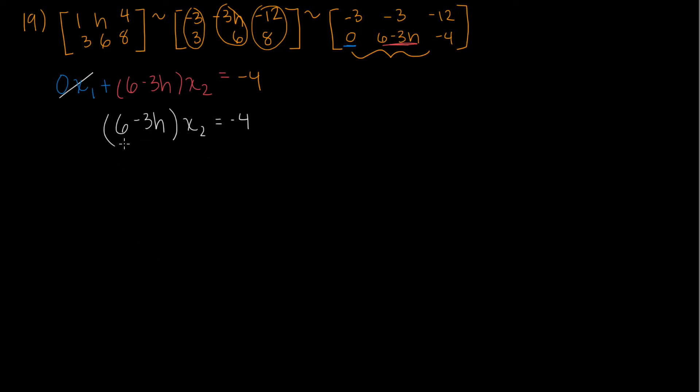So this statement will be false if six minus three h is equal to zero, because that's the coefficient on the x2. x2 can be anything. But six minus three h, which is our coefficient, cannot be zero. Because if six minus three h equals zero, then we're going to get a row that looks like this. We're going to get zero, zero, negative four. What that means is zero, since this is an augmented matrix, zero equals negative four, that is not true.